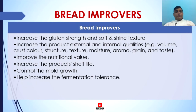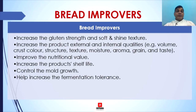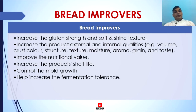Bread improvers are a mix of various acids and enzymes that serve to strengthen the gluten in the flour and also feed the yeast, both of which yield a better loaf. The term is most commonly used to describe a range of natural or chemical additives that speed up the process of dough development. They can be classified into three groups: mineral additives like potassium, ammonium, and GMS; yeast food like sugar and calcium phosphate; and enriching agents like milk and others. Bread improvers increase the gluten strength and provide soft and shiny texture.